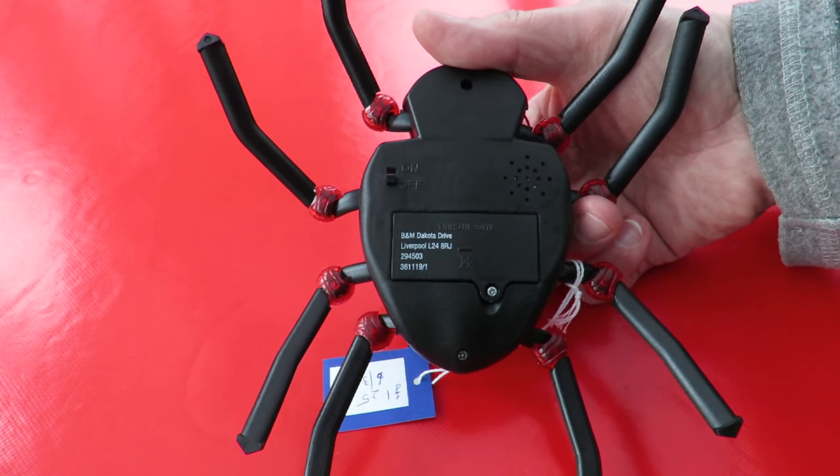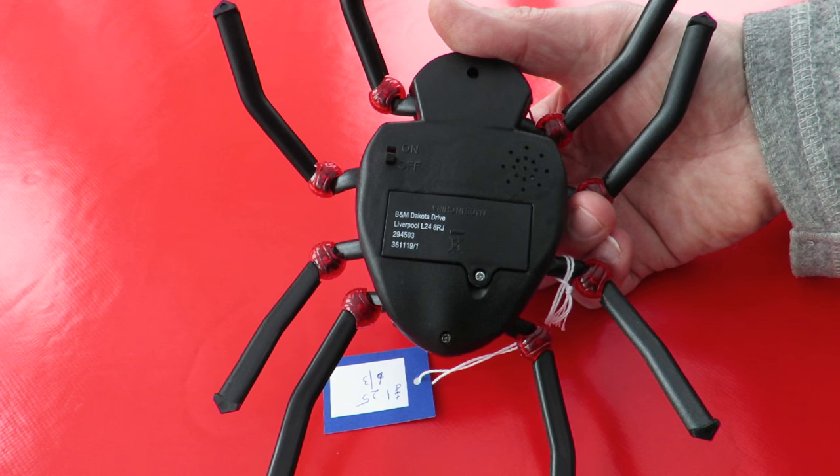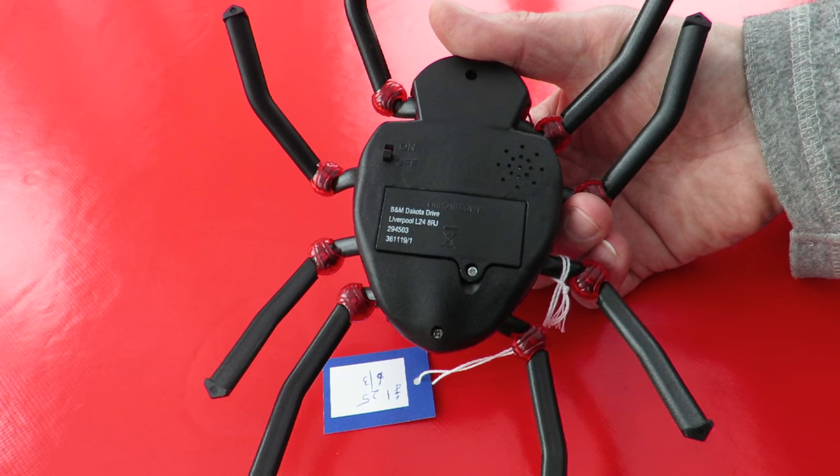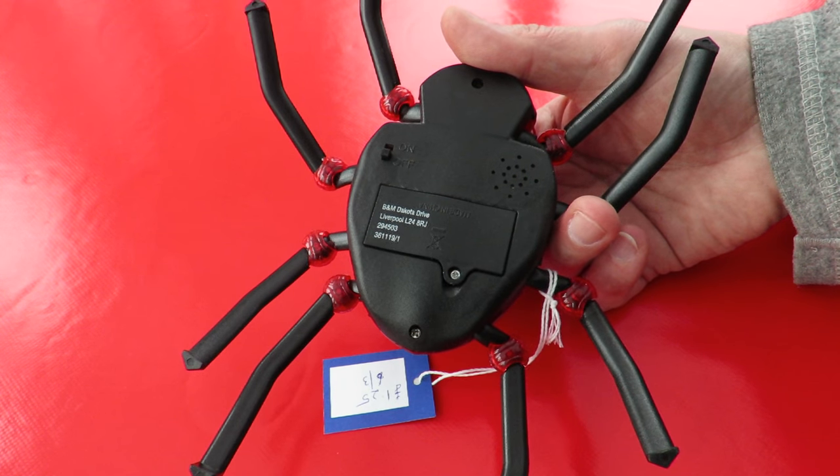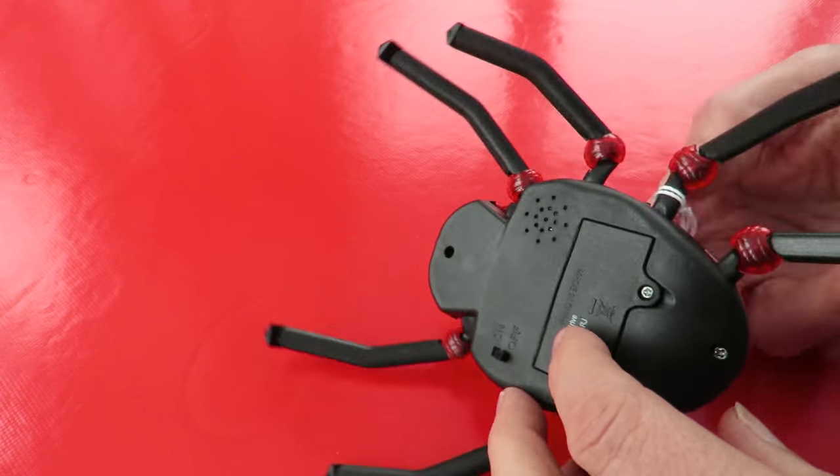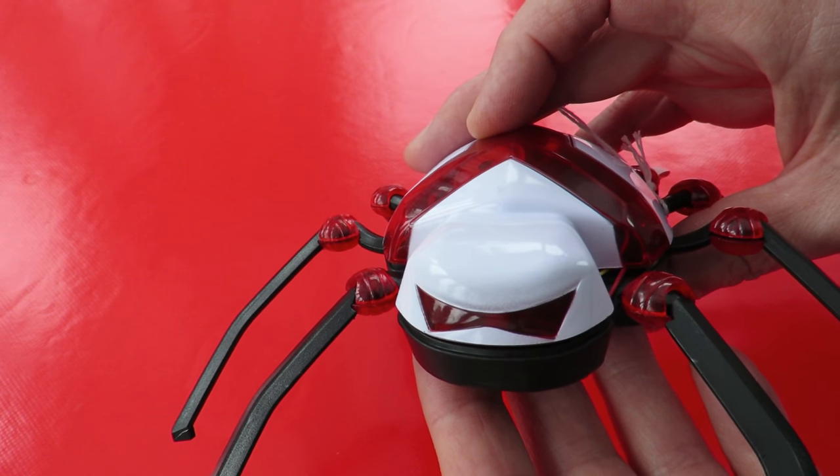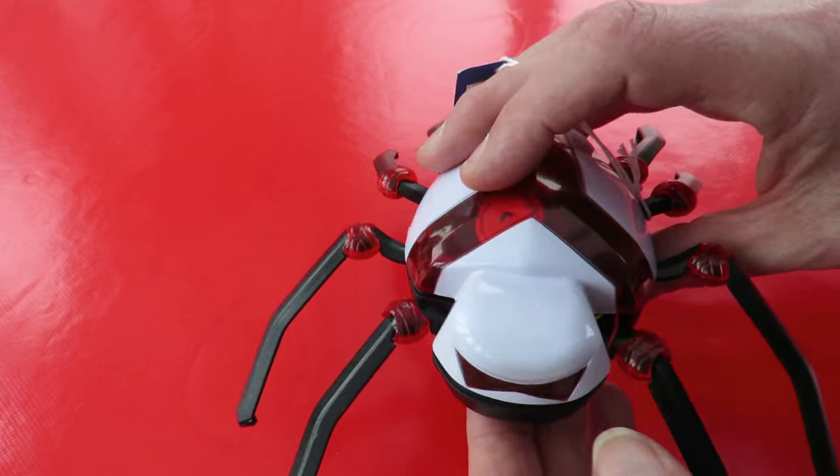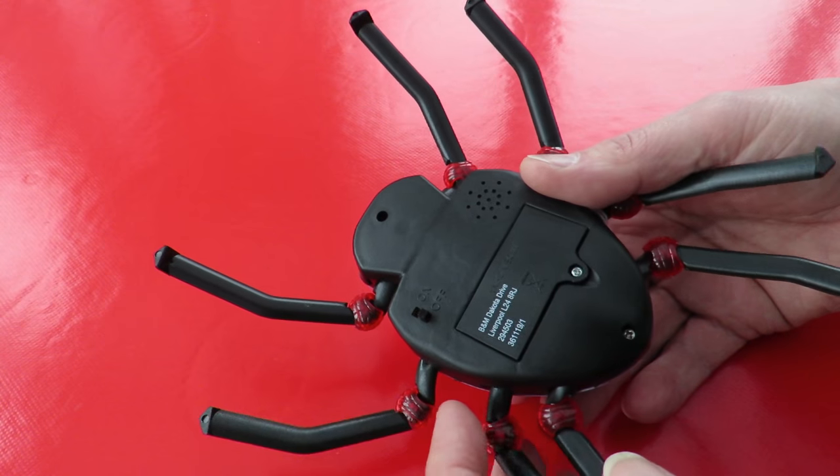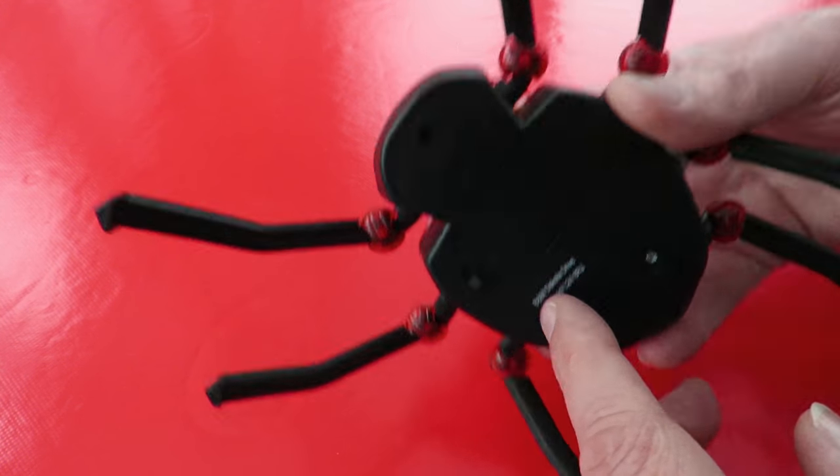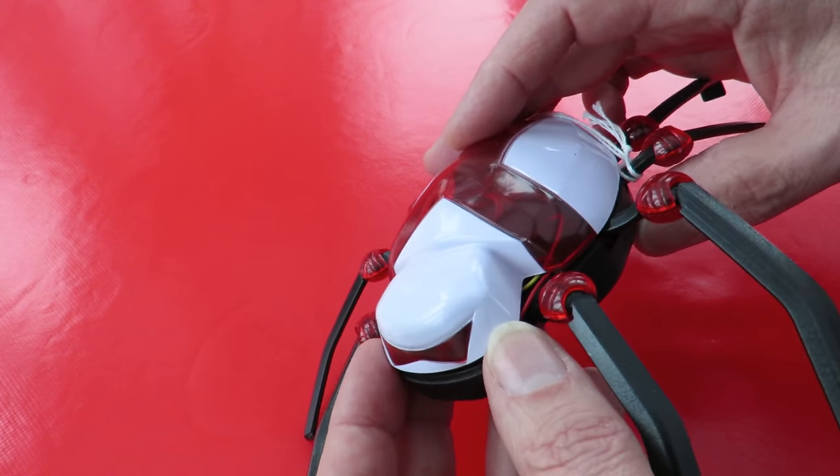It says B&M on the bottom which is one of those bargain stores and I've got a vague idea this might even have been a put together kit. It's got batteries in it. It doesn't seem to do very much so I'm not sure whether it needs new batteries or whether it needs something to make it work. Whether it's infrared or something like that.